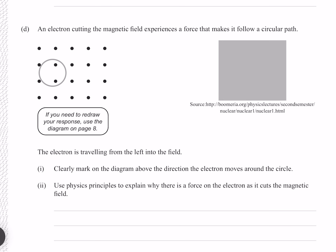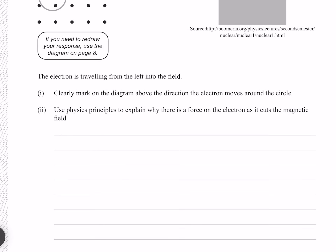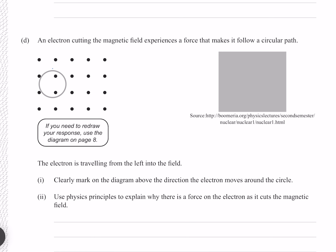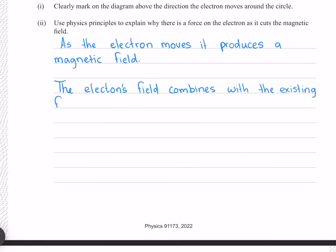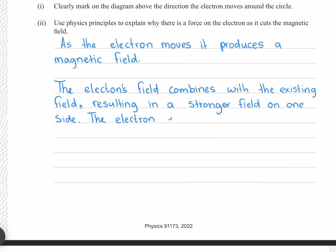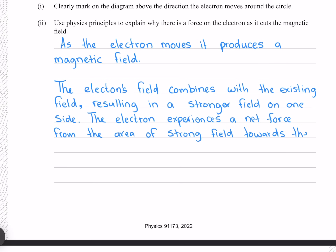An electron cutting the magnetic field experiences a force making it follow a circular path. The electron travels from the left into the field. Using the right-hand rule with fingers pointing up and force directed toward the circle's center, the thumb points right — the direction for a positive charge. Since this is a negative charge, it moves in the opposite direction, towards the left. As the electron moves it produces a magnetic field that combines with the existing field, resulting in a stronger field on one side. The electron experiences a net force from the area of strong field towards the area of weaker field.